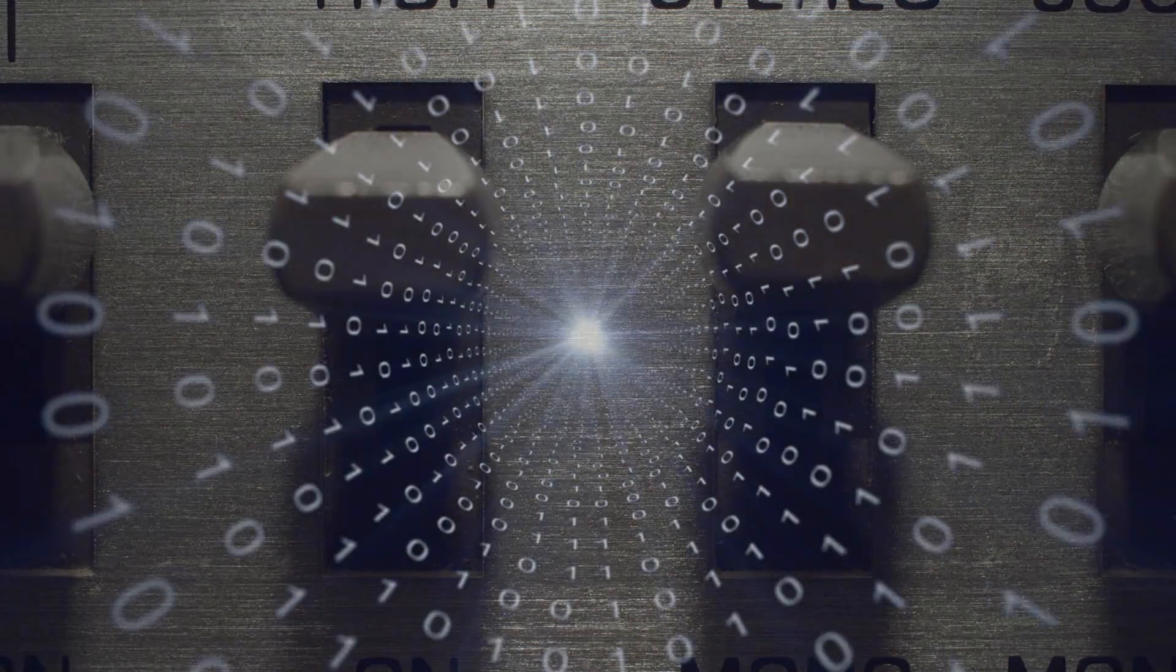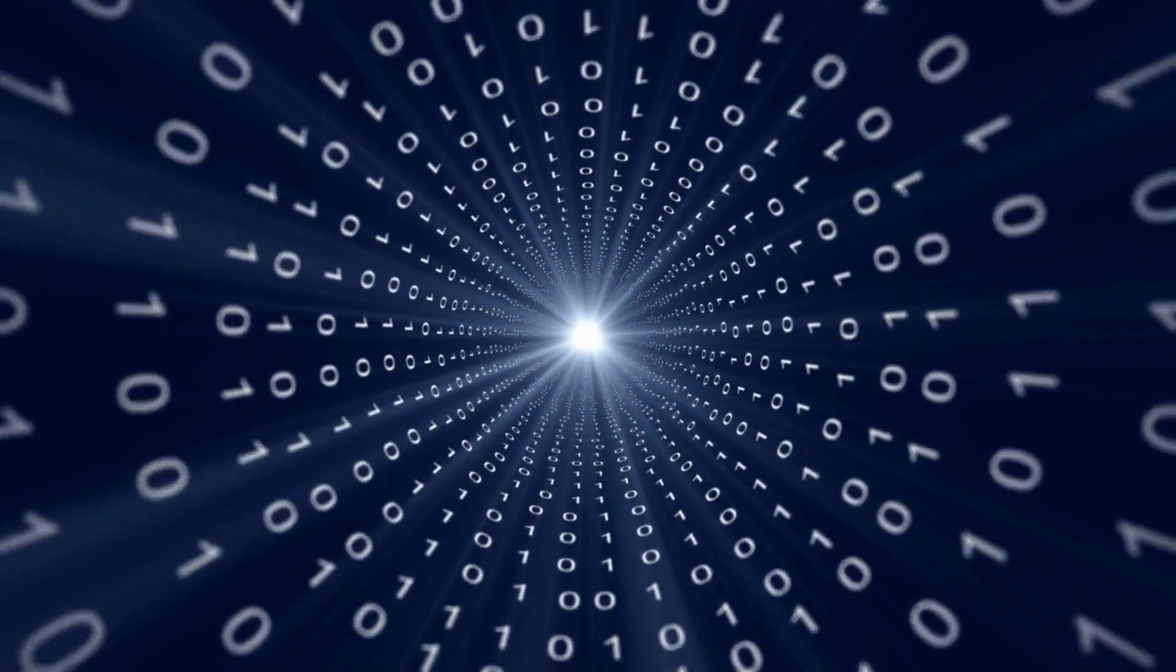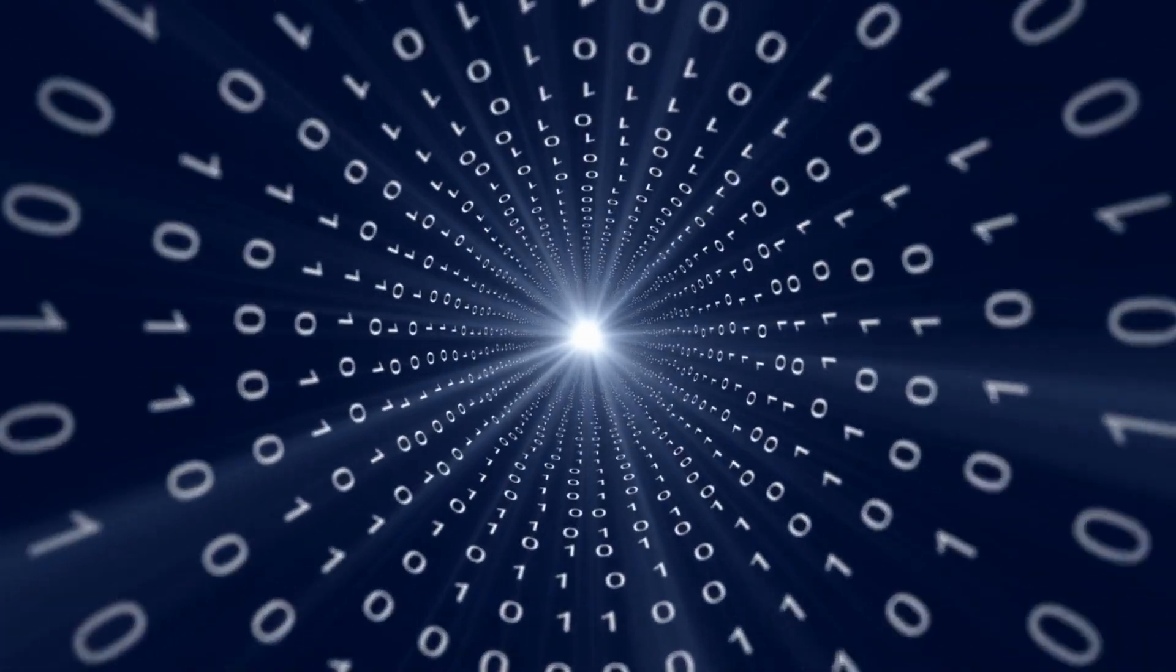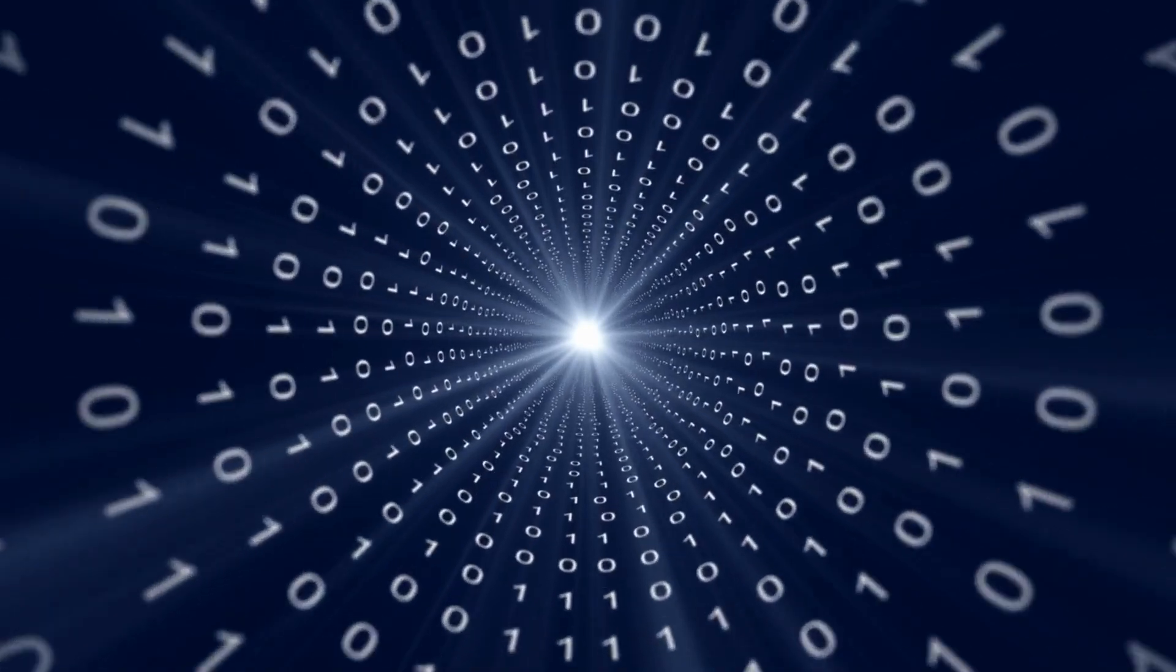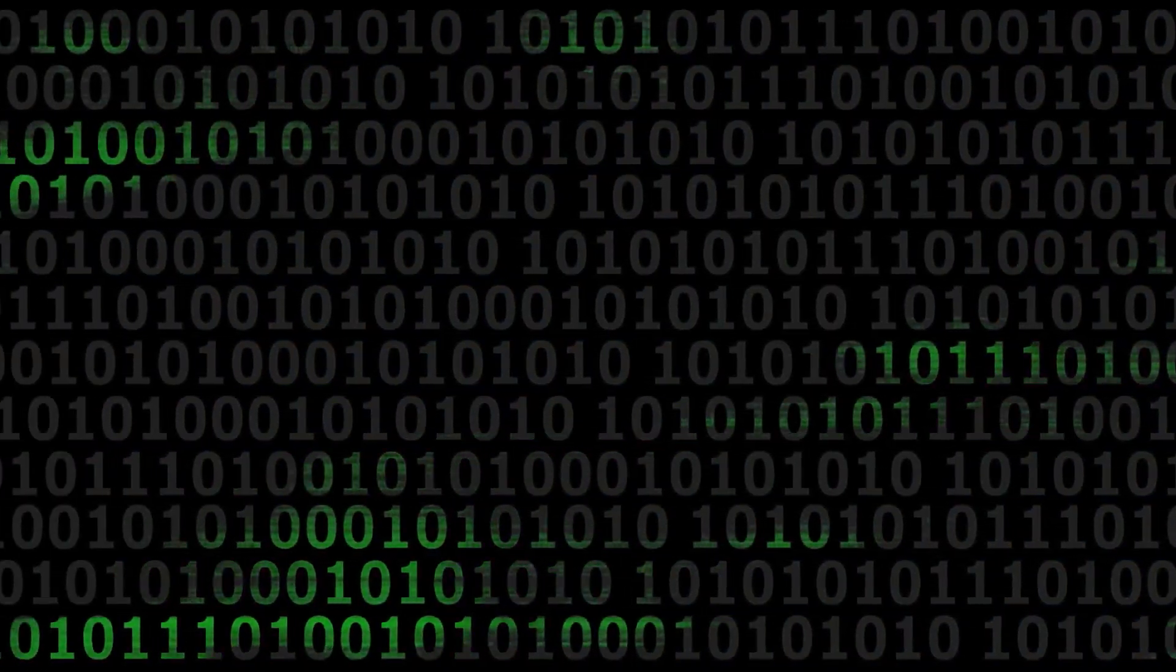Those two choices, 0 or 1, on or off. Each little switch in a computer is called a bit, 0 or 1. A byte is 8 bits. So a megabyte is 8 million bits, a gigabyte is 8 billion bits, while a terabyte is 8 trillion bits.